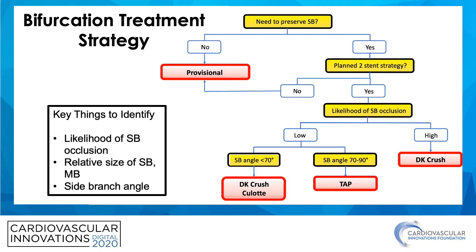This led some colleagues and me to develop a bifurcation treatment strategy. Key things we wanted to identify are the likelihood of side branch occlusion with stenting across it, the relative size of the side branch and main branch, and the angle of the side branch off the main branch. The first question is: is there a need to preserve the side branch? Oftentimes there's no significant disease in the side branch, and a provisional technique is very reasonable. However, if there's a planned two-stent strategy because of significant disease in the side branch, we then look at the likelihood of side branch occlusion.